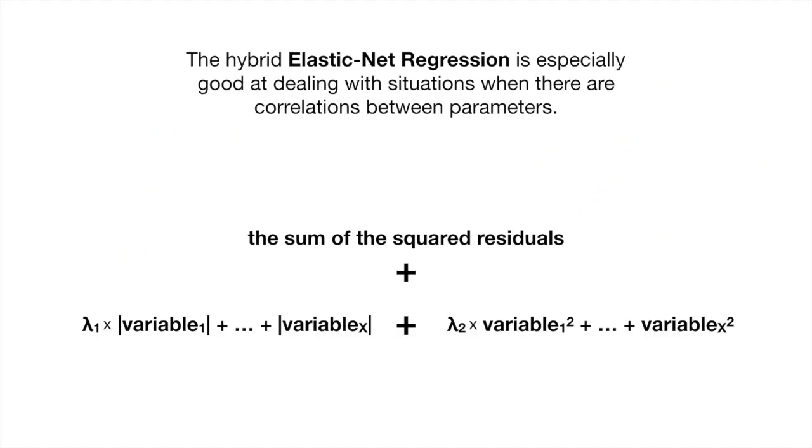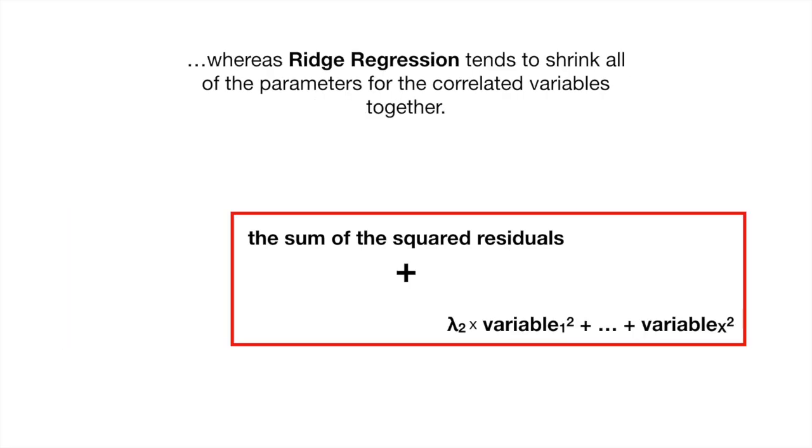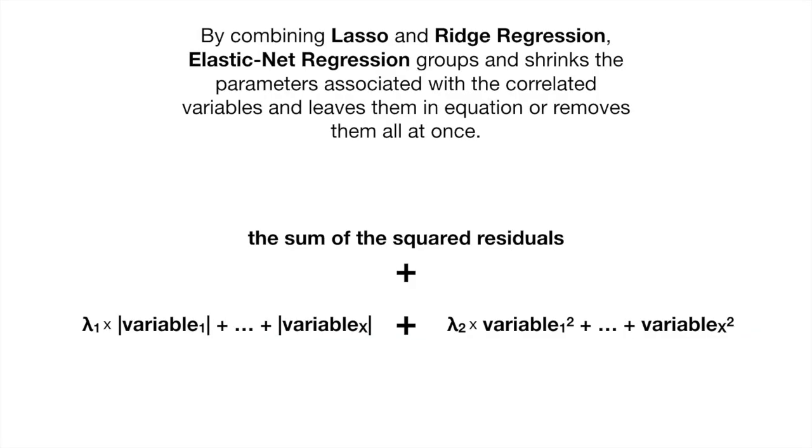The hybrid Elastic Net Regression is especially good at dealing with situations when there are correlations between parameters. This is because, on its own, Lasso Regression tends to pick just one of the correlated terms and eliminate the others. Whereas Ridge Regression tends to shrink all of the parameters for the correlated variables together. By combining Lasso and Ridge Regression, Elastic Net Regression groups and shrinks the parameters associated with the correlated variables and leaves them in the equation or removes them all at once. BAM!